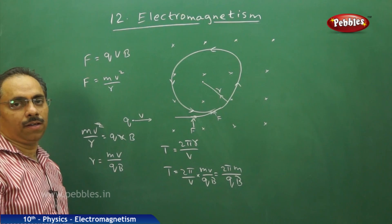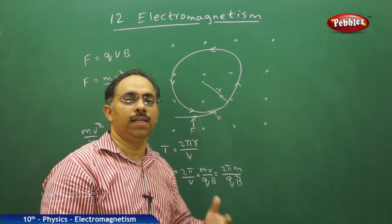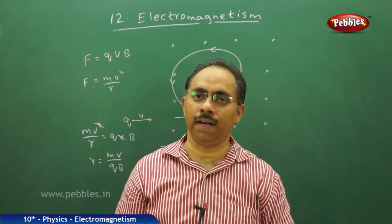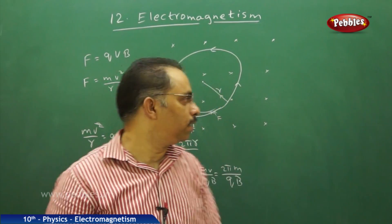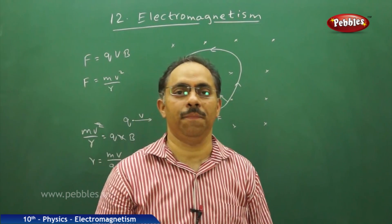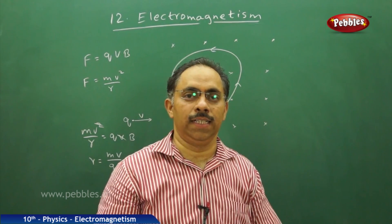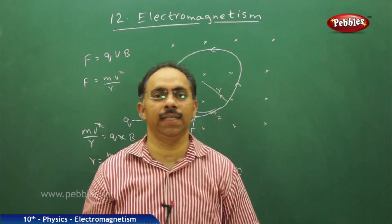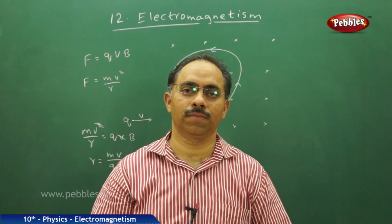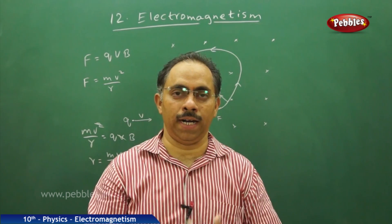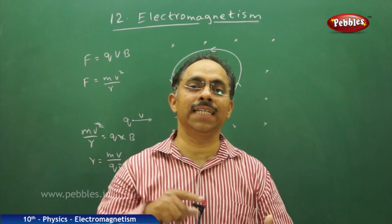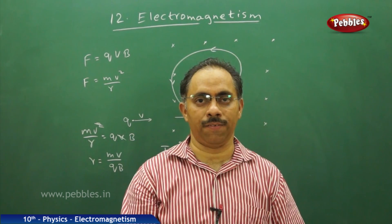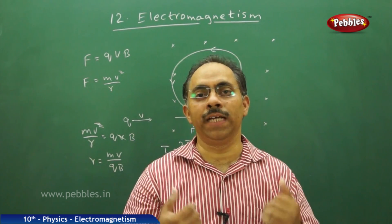We have seen the situation where a charged particle moves in a uniform external magnetic field. Now, instead of a charged particle, let us consider a conductor carrying current placed in a magnetic field. When it is placed in an external magnetic field, what could be the effect? Let us see.